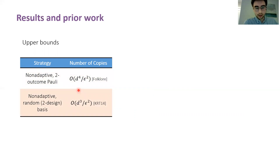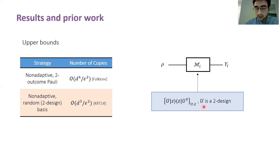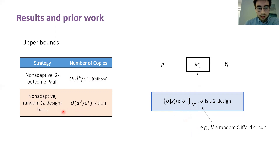It was also known, due to work by Kueng, Rauhut, and Terstiege, that it suffices to take a number of copies that grows like d-cubed using rank-one POVMs. You can imagine that what you're doing is measuring in a sufficiently random basis — specifically, one generated by unitary operators that comprise a 2-design. To make this more concrete, you can imagine that U is like a random Clifford circuit. They also show that an improved bound holds if you know an upper bound on the rank of the state, but I'll ignore that for the purposes of this talk.